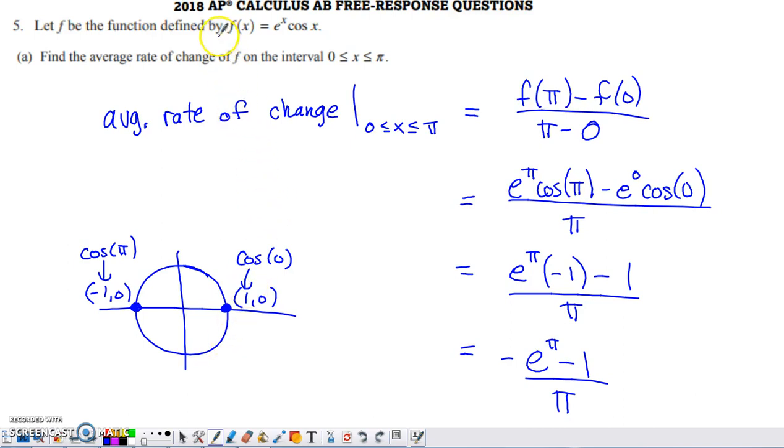We'll take a few minutes in this video to talk about number 5 from the 2018 AP Calc AB exam. It's a non-calculator question, and they present us with a pretty simple situation: here's a function f of x. In part A, they ask us to find the average rate of change of f on the interval 0 to pi.